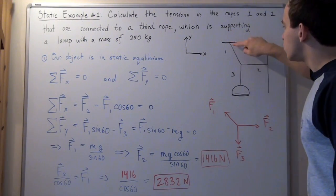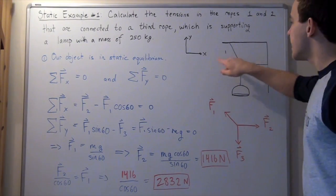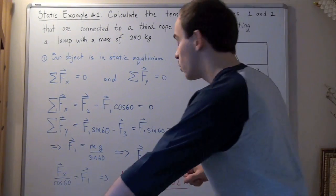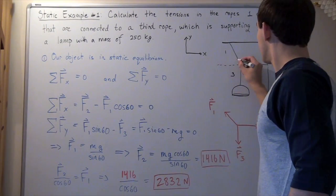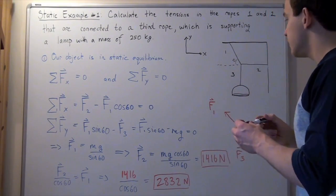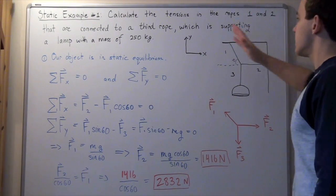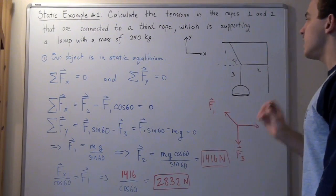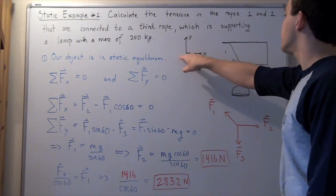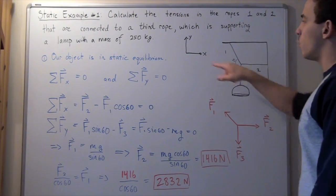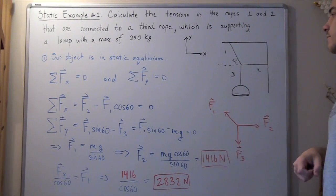The angle that rope number one makes with our horizontal, with our x-axis, is 60 degrees. This is our x-axis and this is our y-axis. Anything pointing up is positive, anything pointing to the right is positive, anything pointing to the left is negative, and anything pointing down is also negative.